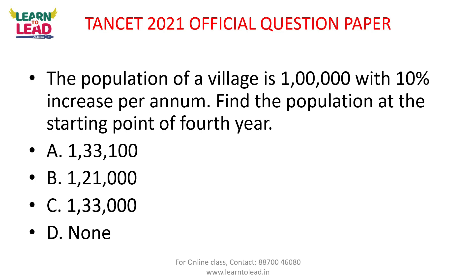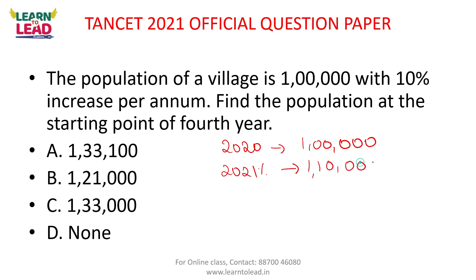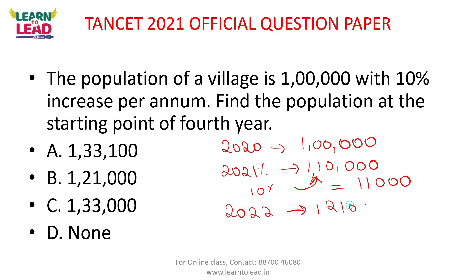In 2020, population is 1 lakh. In 2021, 10% increase: 1 lakh + 10,000 = 1,10,000. In 2022 (2nd year), 10% of 1,10,000 added. In 2023 (3rd year), add 10% again. The answer: 1,21,000 → add 1,21,00 → giving 1,33,100. That is your answer.